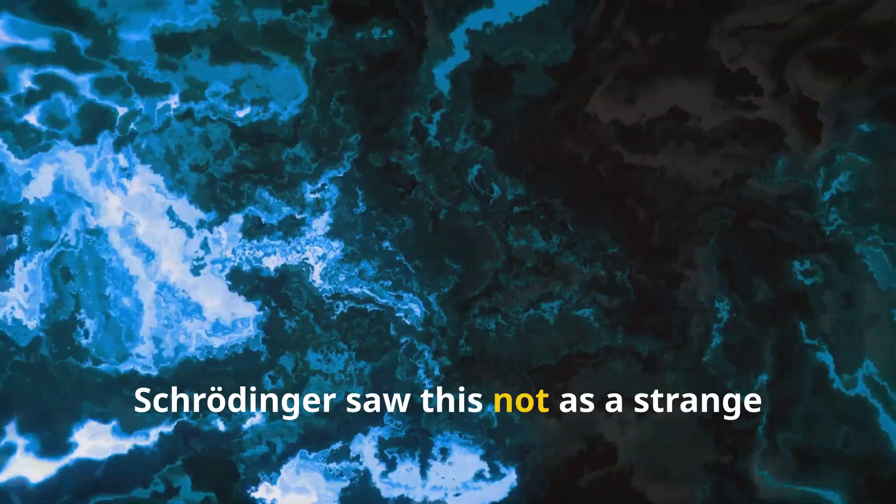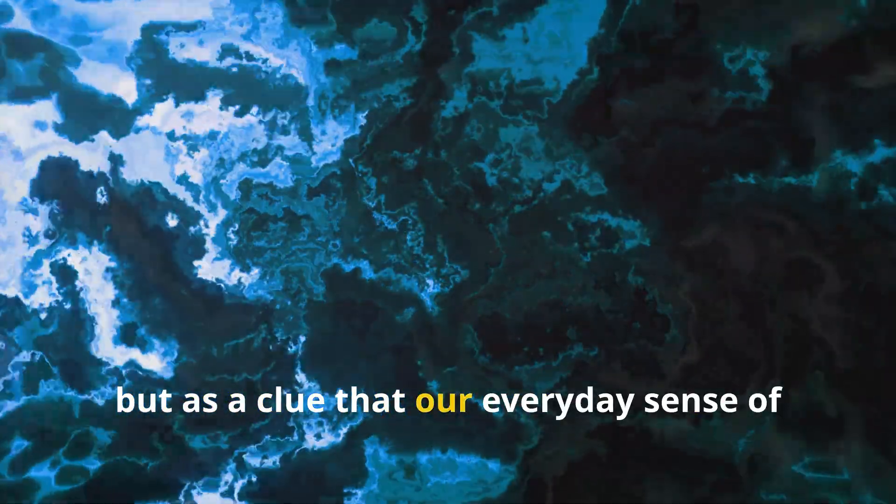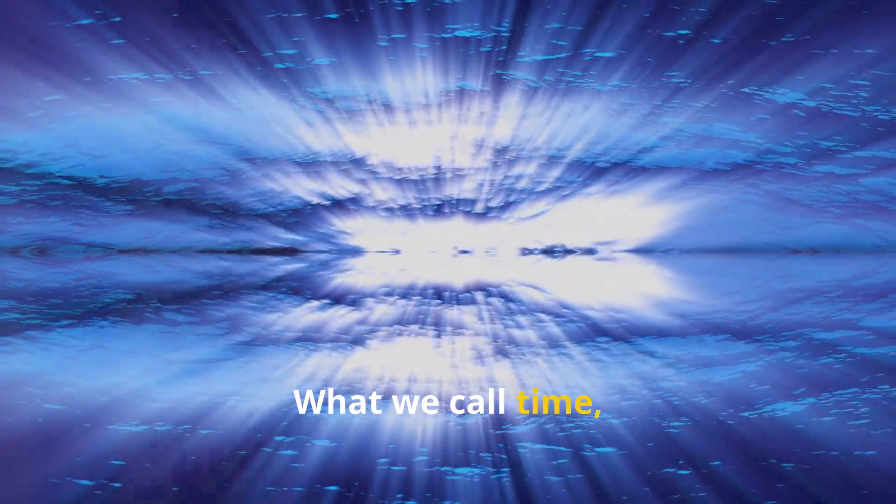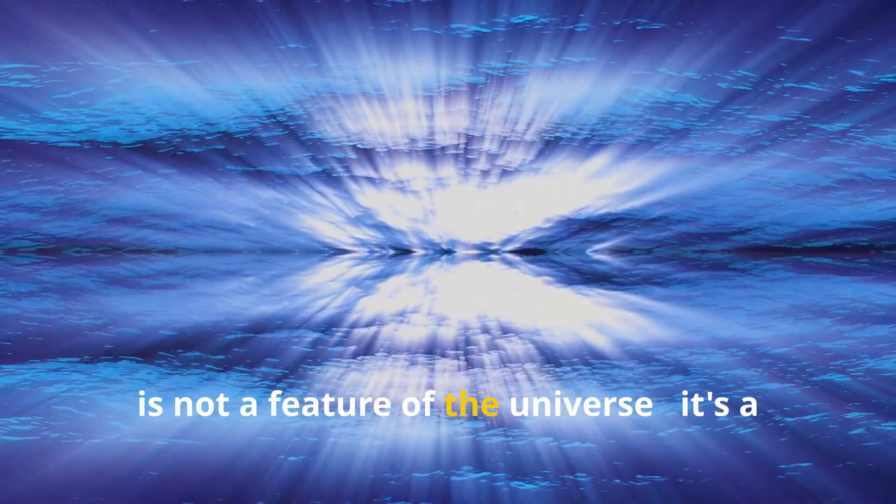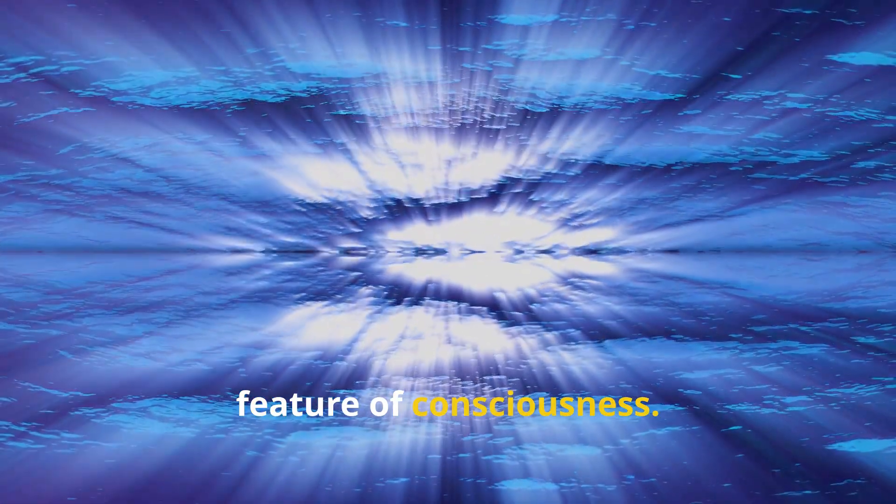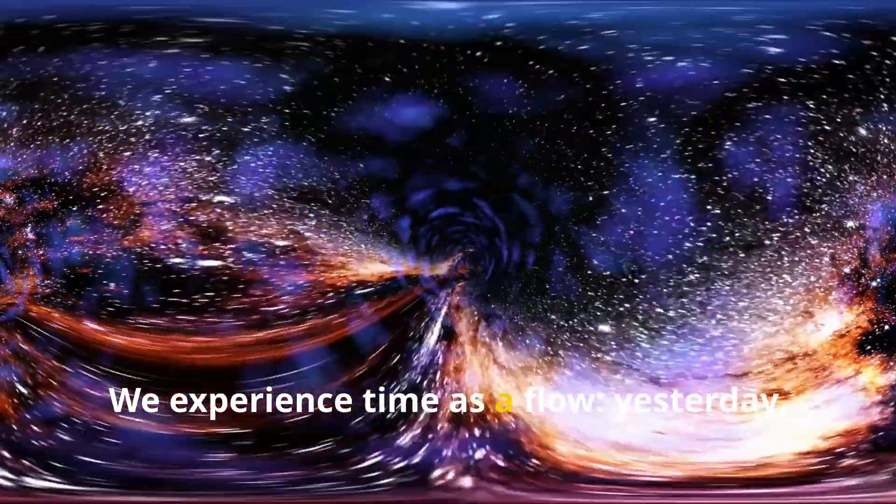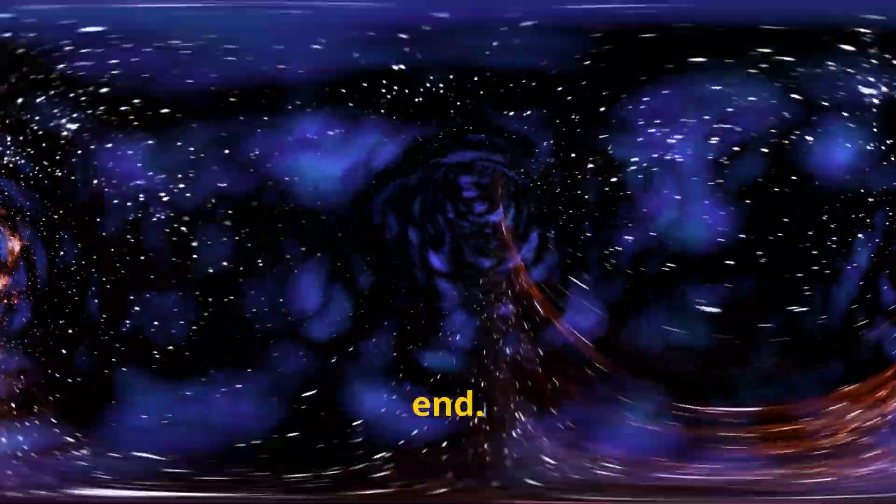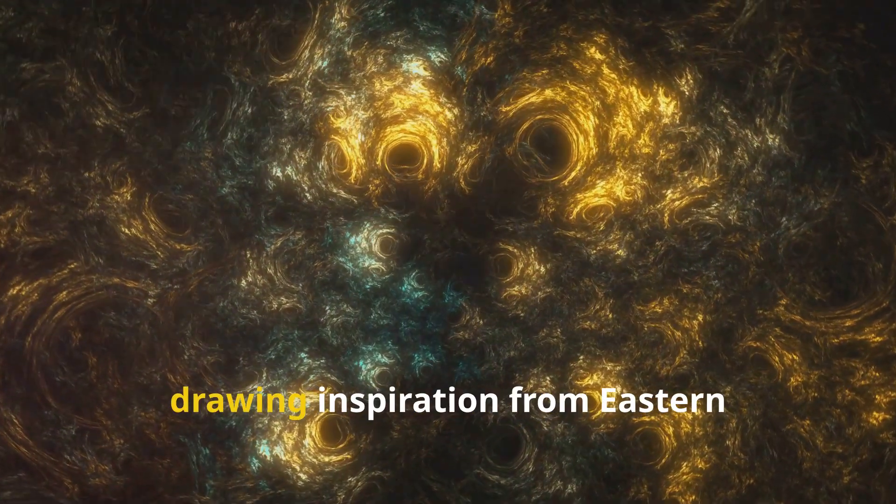Schrödinger saw this not as a strange exception to the universe, but as a clue that our everyday sense of time may be an illusion. What we call time, he believed, is not a feature of the universe—it's a feature of consciousness.